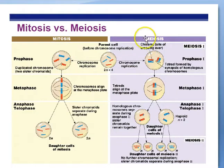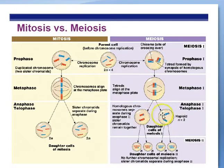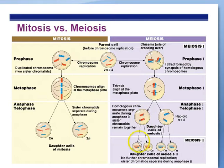During meiosis — making sex cells, also called gametes — during meiosis I, the homologous chromosomes pair up. Notice they don't pair up during mitosis. During meiosis I, the homologous chromosomes separate to separate cells, going from two sets to one set — diploid to haploid. Then during meiosis II, the sister chromatids separate, and we're going from haploid to haploid.